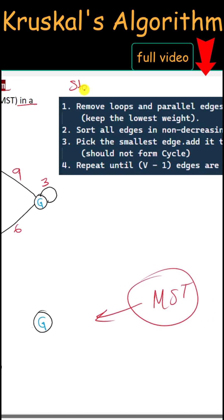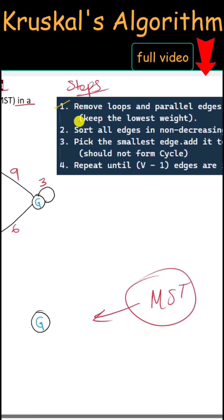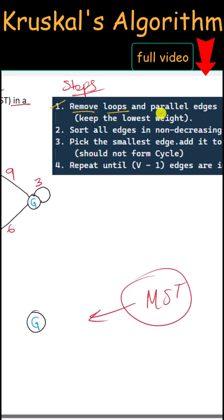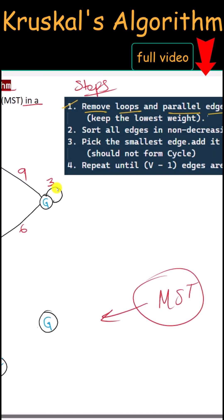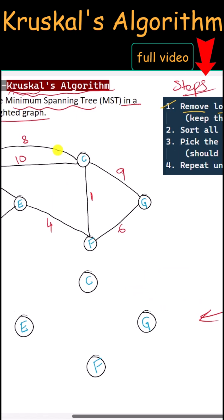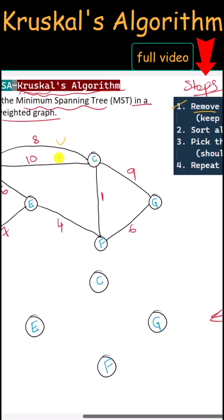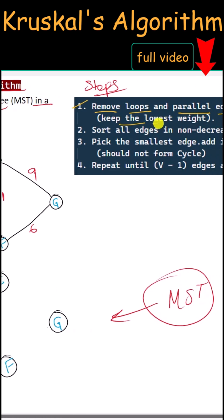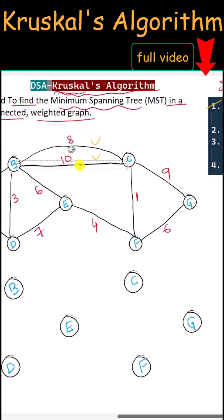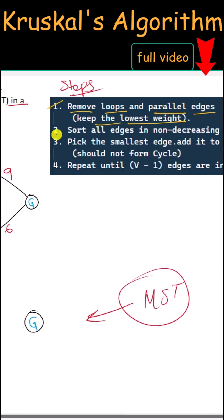Here are the steps we're going to follow. The first step is to remove all the loops and parallel edges. Here we're going to remove this loop, and here we have the parallel edge — we're going to keep the edge with the lowest weight and remove the other edge.